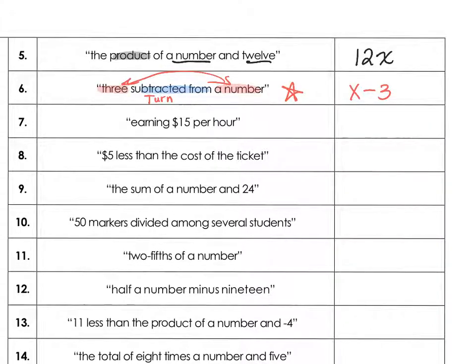In number 7, we have earning $15 per hour, and we don't know the hours, so 15 times x, where x is going to represent our hours. Per is multiplication.